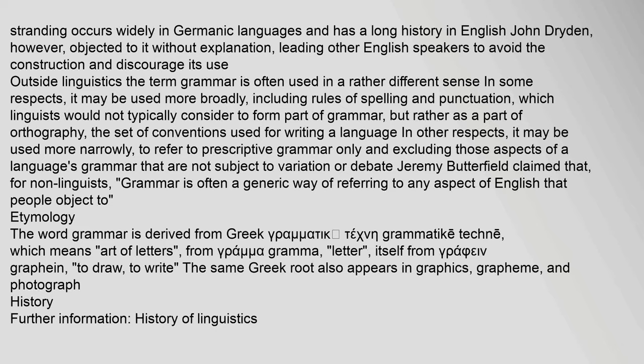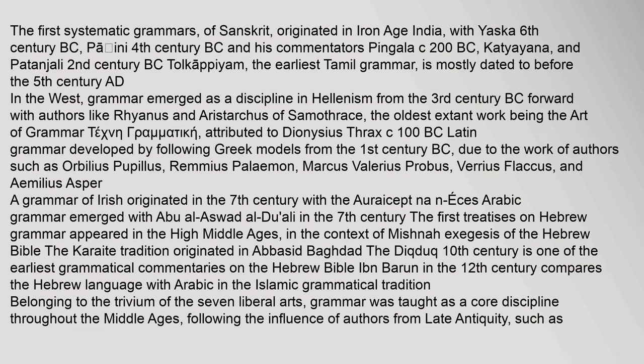The same Greek root also appears in graphics, grapheme, and photograph. The first systematic grammars of Sanskrit originated in Iron Age India, with Yaska (6th century BC), Panini (4th century BC), and his commentators Pingala (c. 200 BC), Katyayana, and Patanjali (2nd century BC). Tolkappiyam, the earliest Tamil grammar, is mostly dated to before the 5th century AD. In the West, grammar emerged as a discipline in Hellenism from the 3rd century BC forward, with authors like Rhianus and Aristarchus of Samothrace, the oldest extant work being the Art of Grammar (Technē Grammatikē), attributed to Dionysius Thrax (c. 100 BC).